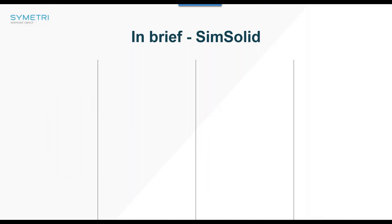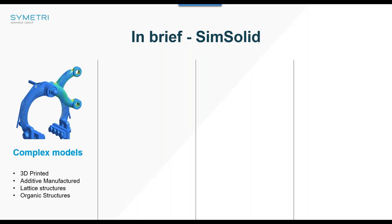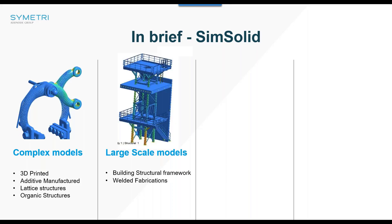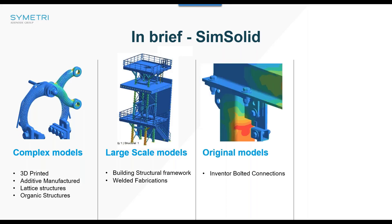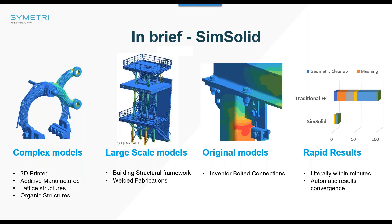In brief, SimSolid is ideal for complex models that would be almost impossible to mesh using traditional tools — such as 3D printed parts, additive manufactured lattice structures, or organic structures. It's also ideal for large structural framework models and welded fabrications. One of its biggest strengths is that it works directly on original geometries and is very, very fast.